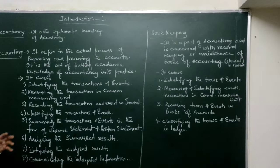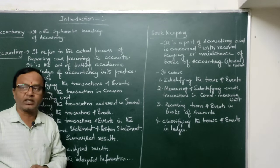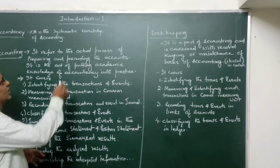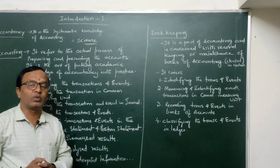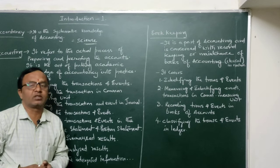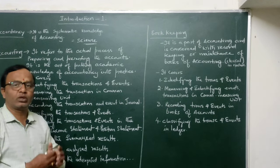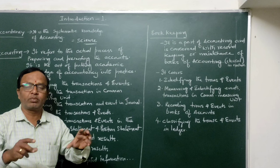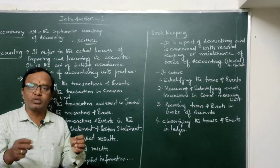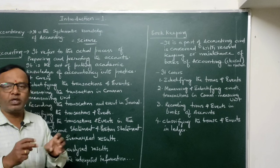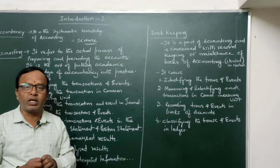Accountancy is nothing but a systematic knowledge of accounting. When we say that, it means accountancy is a science relating to accounting. Science is a systematized body of knowledge relating to one particular aspect. Through centuries, many people have done much research on it and developed particular generalizations, methods, procedures, and techniques which we are able to use today. So accountancy is a science relating to accounting.